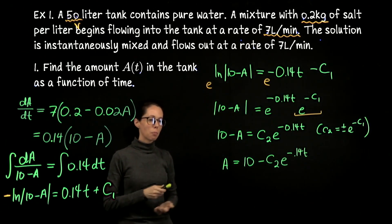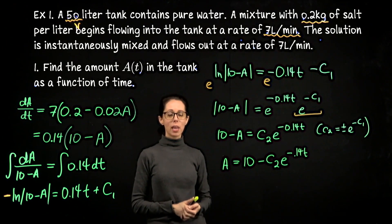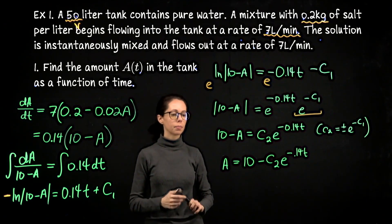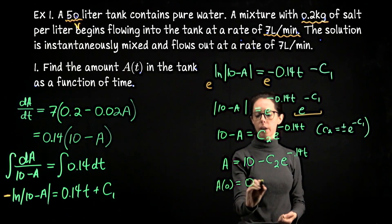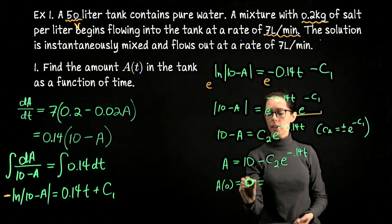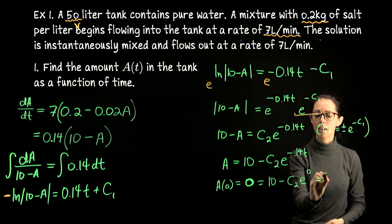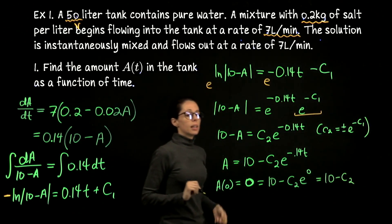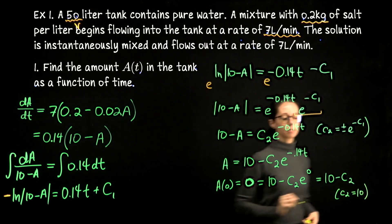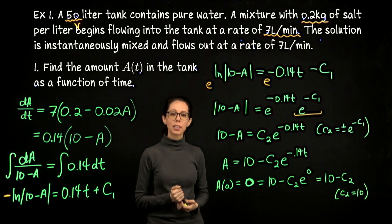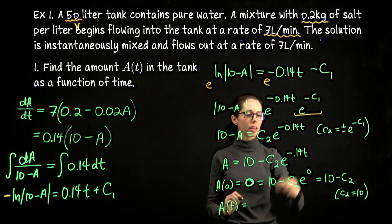Applying the initial condition A(0) = 0: 0 = 10 − C₂e^0 = 10 − C₂, so C₂ = 10. Therefore the amount of salt in the tank over time is A(t) = 10 − 10e^(−0.14t). Checking: A(0) = 10 − 10 = 0 kilograms of salt. Correct. As t→∞, e^(−0.14t)→0, so A→10 kilograms, confirming our long-term prediction.